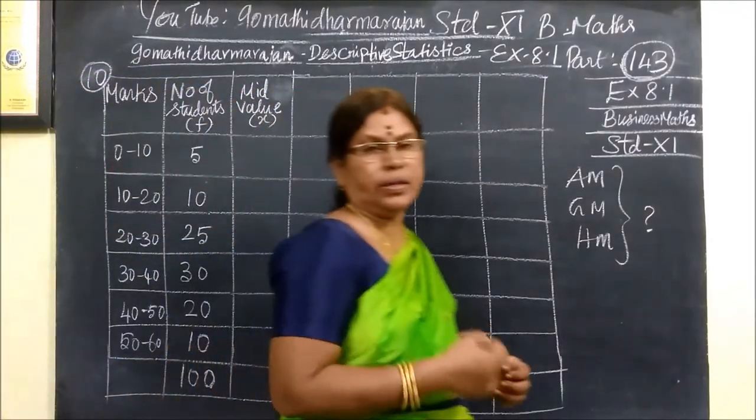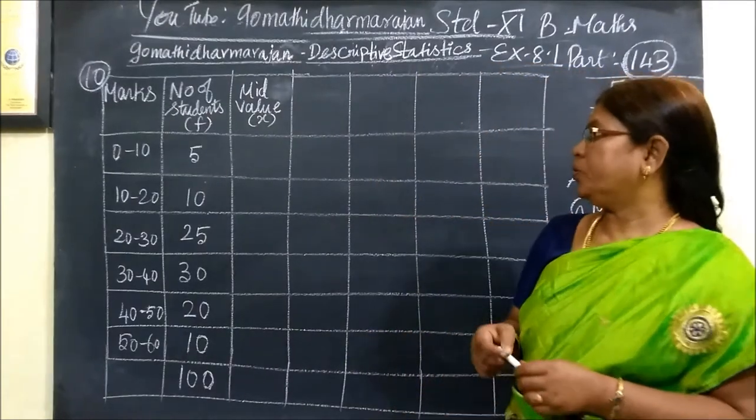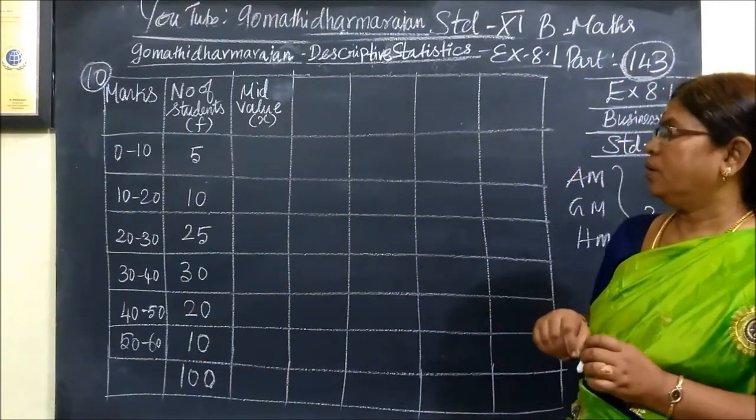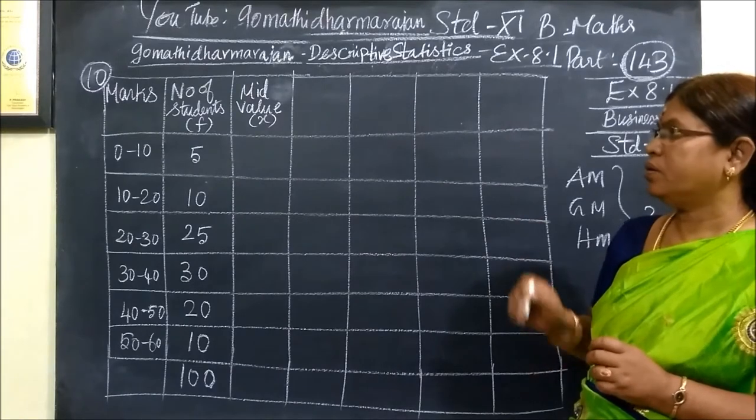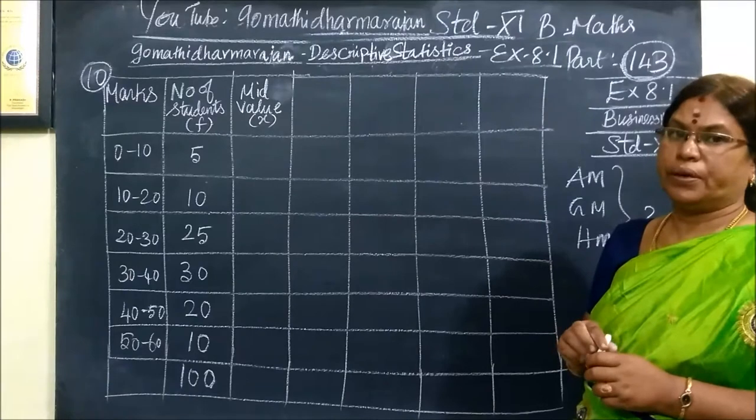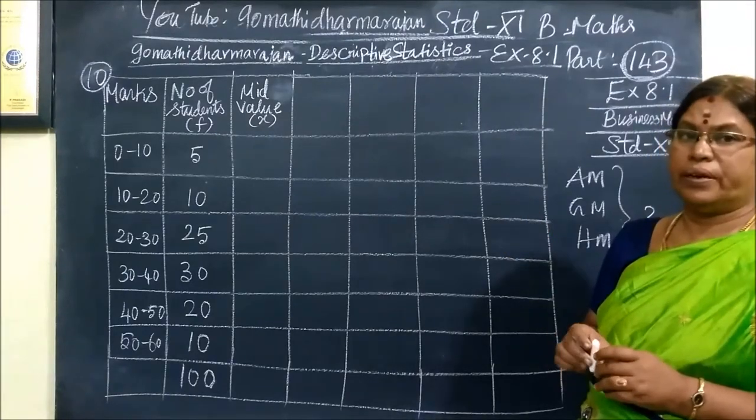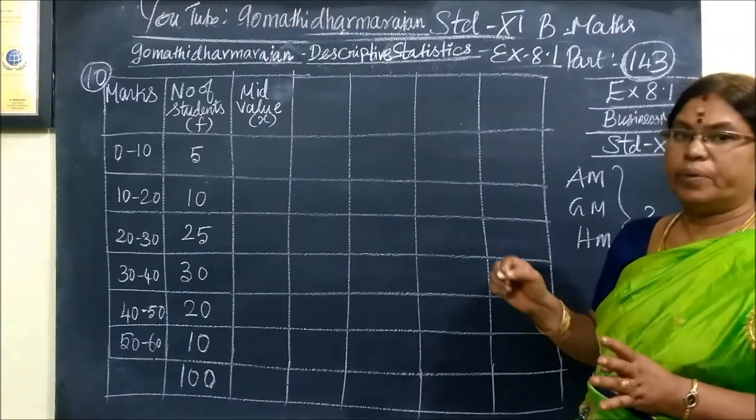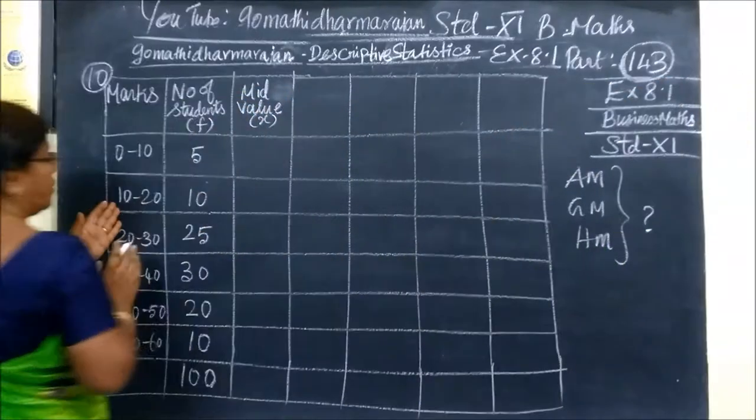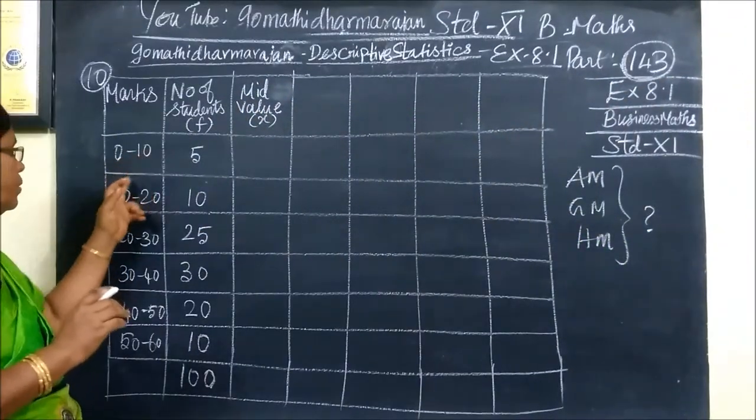Good morning, students. As we can see, question number 10. So far, we have seen Business Mathematics. You are given marks and number of students. The data values are given. If you want to convert to standard class intervals, continuous class intervals, the upper limit is 10, lower limit is 10, upper limit is 20, lower limit is 20.